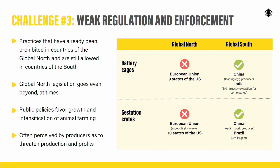Battery cages are banned in the European Union and parts of the United States, but are still allowed in China — the leading egg producer in the world — meaning the hens of the biggest egg-producing country are still trapped in cages. Battery cages are also allowed in most states of India, the third largest egg producer. This is a lot of hens still trapped in cages.